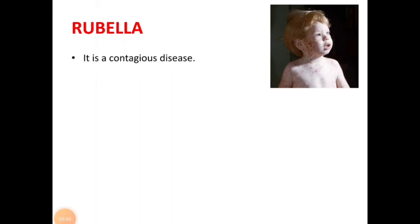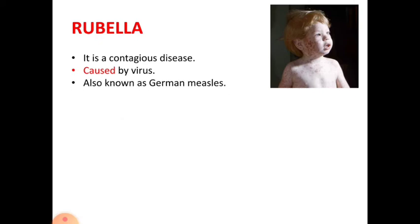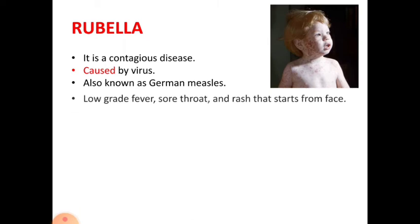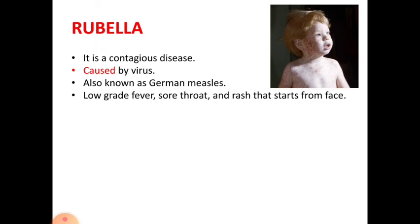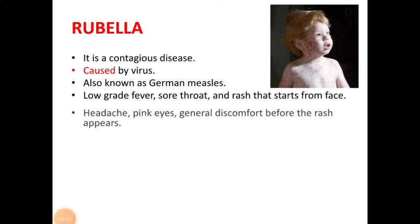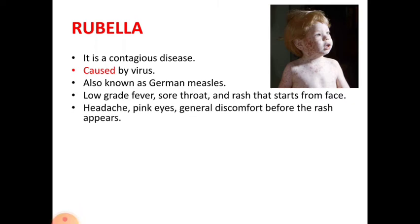The next disease is rubella. Rubella is a contagious disease caused by a virus. It is also called German measles, but the virus leading to rubella is different from the virus which causes measles. People who get rubella usually have a mild illness with symptoms like low-grade fever, sore throat, and a rash that starts from the face and spreads to the rest of the body.